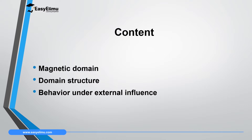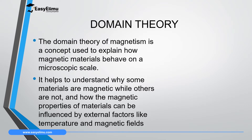Domain theory of magnetism is a concept which is used to explain how magnetic materials behave on a microscopic scale — at the atomic level. Remember what we discussed in the particulate nature of matter: matter is made up of very small particles which are in continuous random motion in liquids and gases, and at constant vibration in solids.